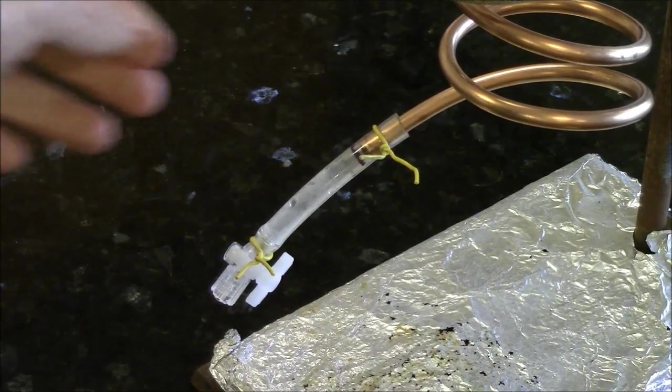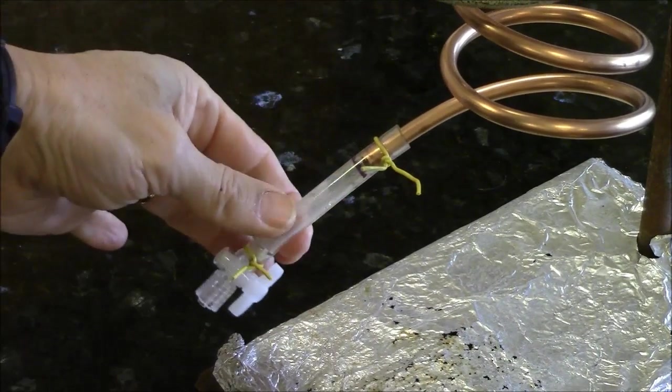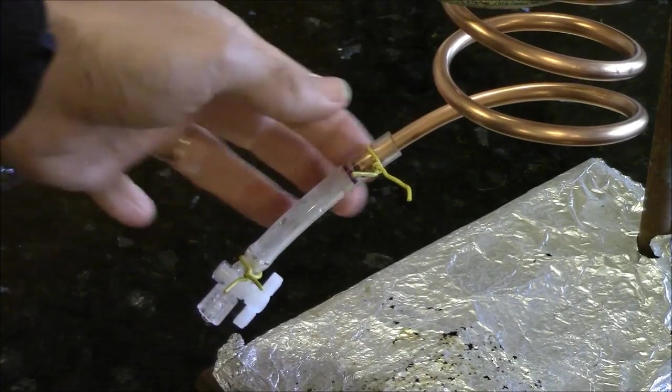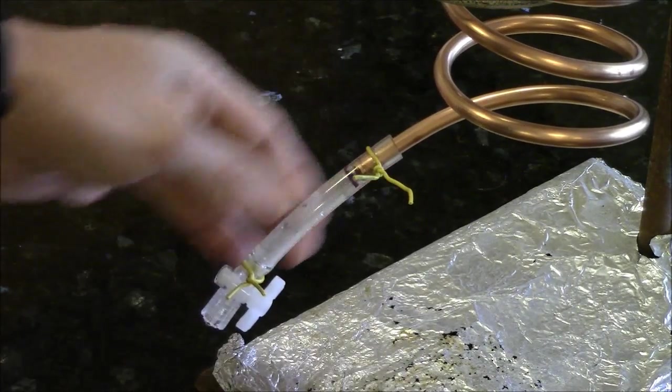Here's the bottom end of the copper coil with flexible tubing and a valve. Each end is twist tied.